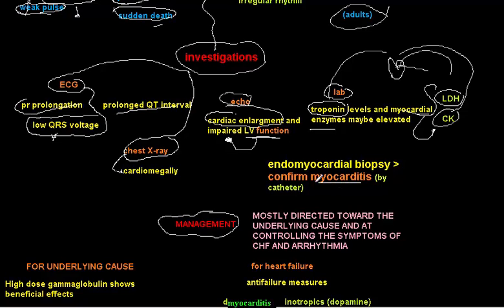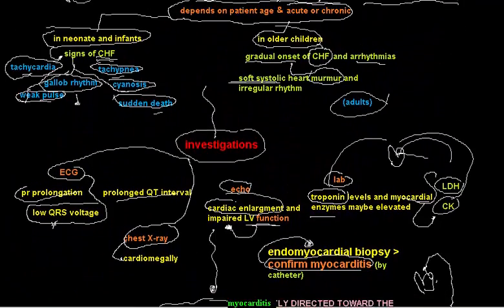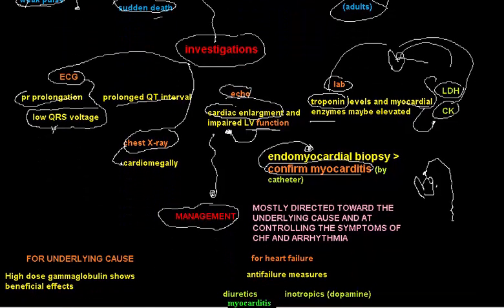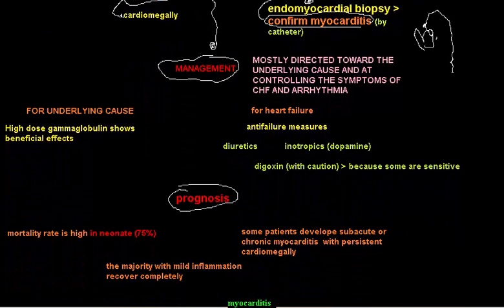The confirmative diagnostic test for myocarditis is endomyocardial biopsy, performed via catheter through the femoral vein to the vena cava. This biopsy confirms the diagnosis of myocarditis. To summarize investigations: ECG showing low QRS voltage, chest X-ray showing cardiomegaly, echocardiogram, elevated myocardial enzymes, with endomyocardial biopsy as the gold standard.